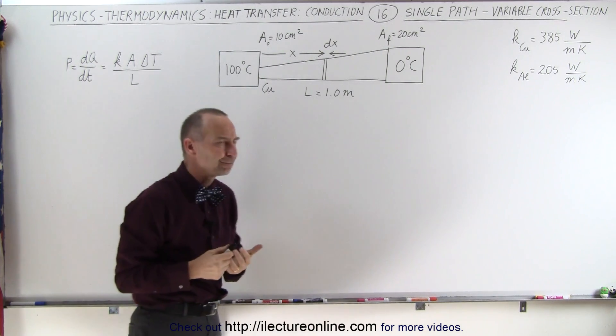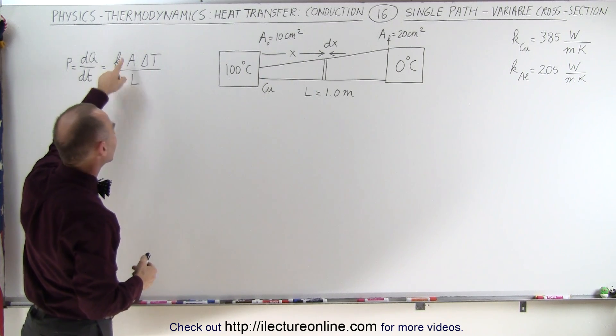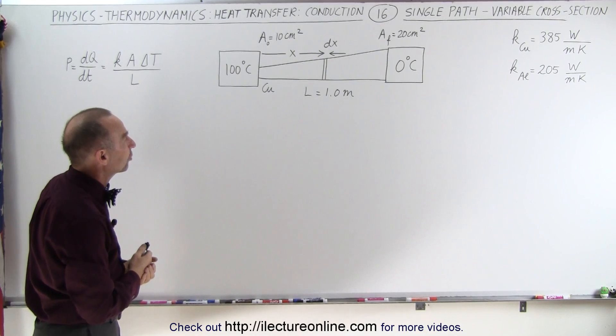So how do we figure that out? Well, first of all, since the cross-sectional area is not a constant, we're going to need the equation describing that cross-sectional area.